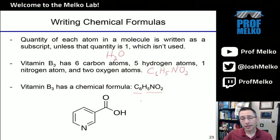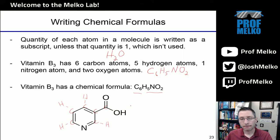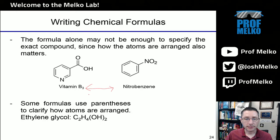That doesn't really tell you how the atoms are organized. So a lot of times you'll see these structural formulas — each of these corners of the ring here are carbon atoms, and there are also some hydrogen atoms attached that are not drawn. You can count up and see that there are six carbons, five hydrogens, two oxygens, and one nitrogen. It turns out that vitamin B3, C6H5NO2, has the same chemical formula as nitrobenzene — six carbons, five hydrogens, one nitrogen, two oxygens. So we need the structural formula to tell us how these atoms are arranged.